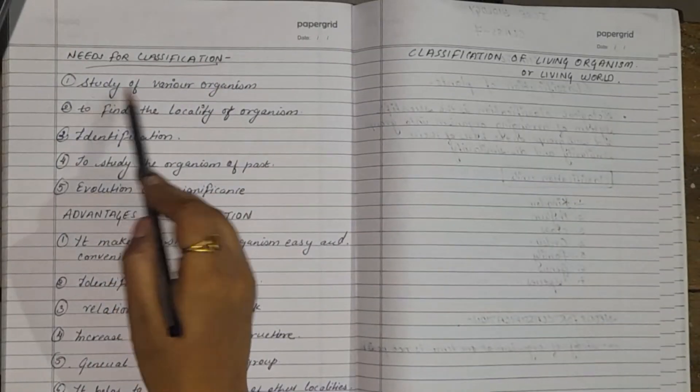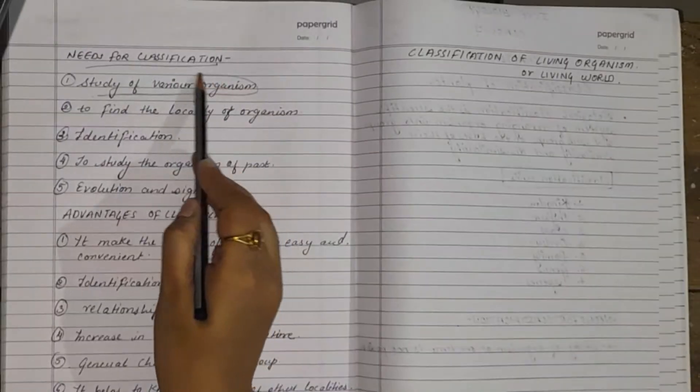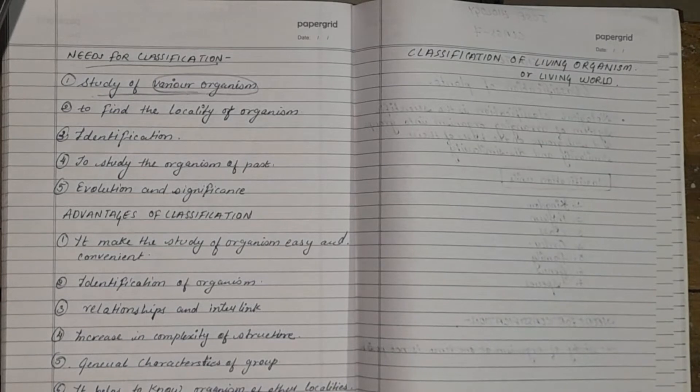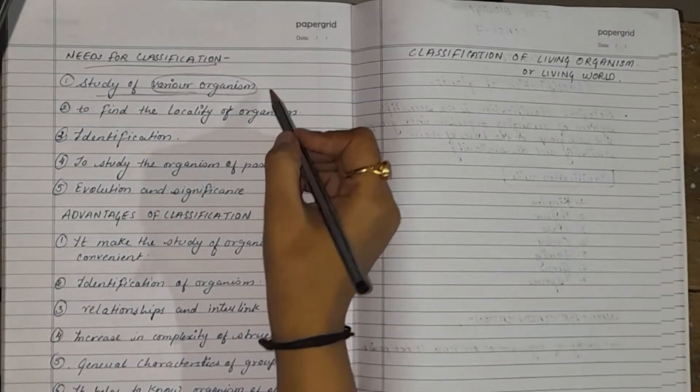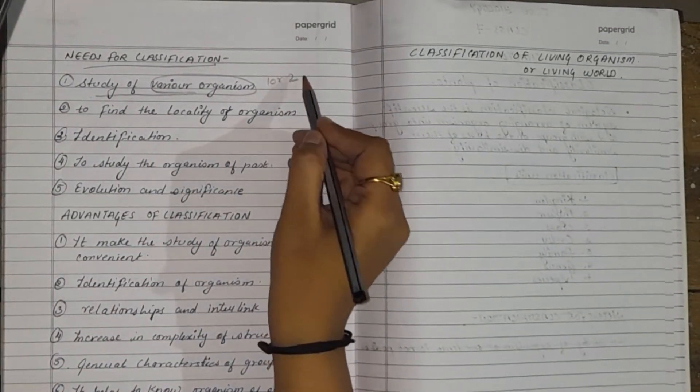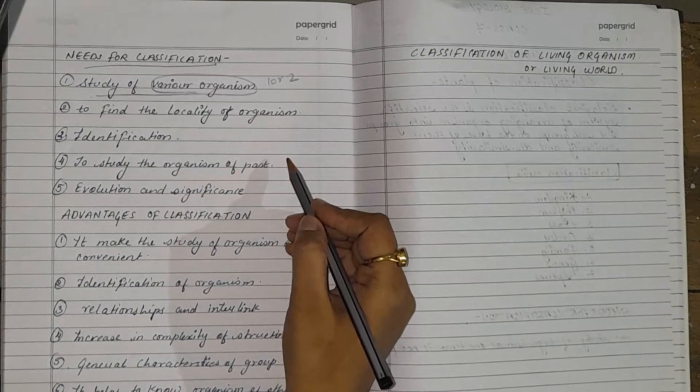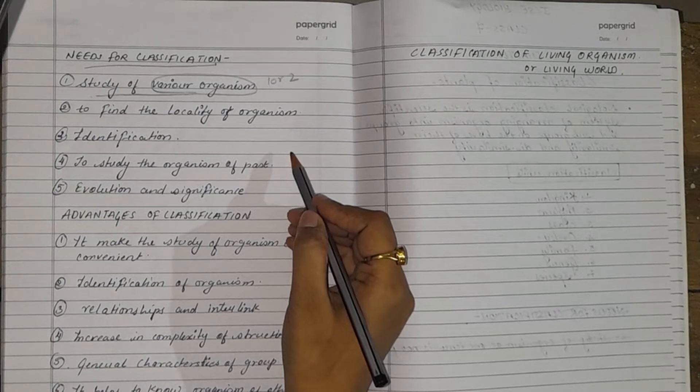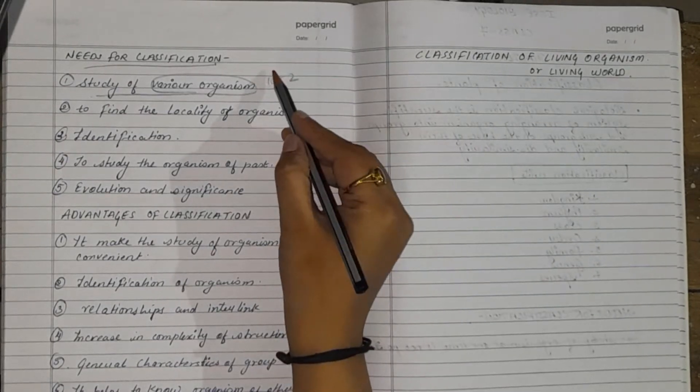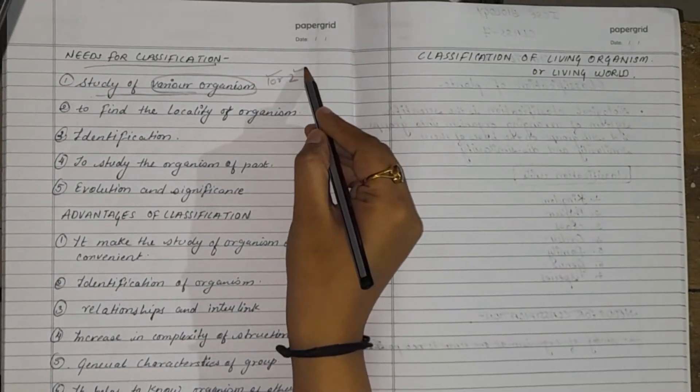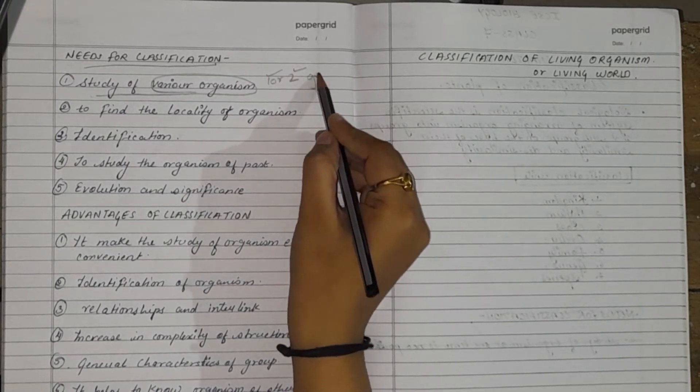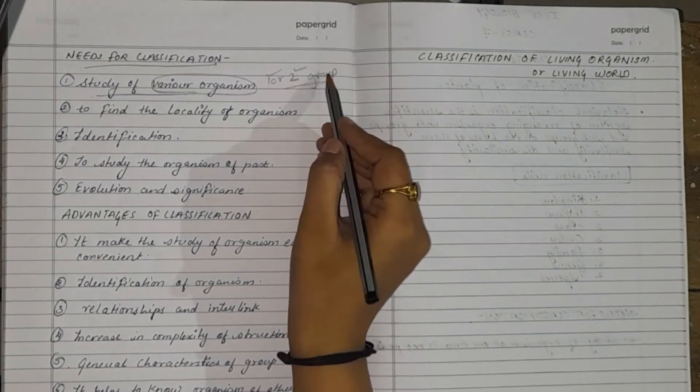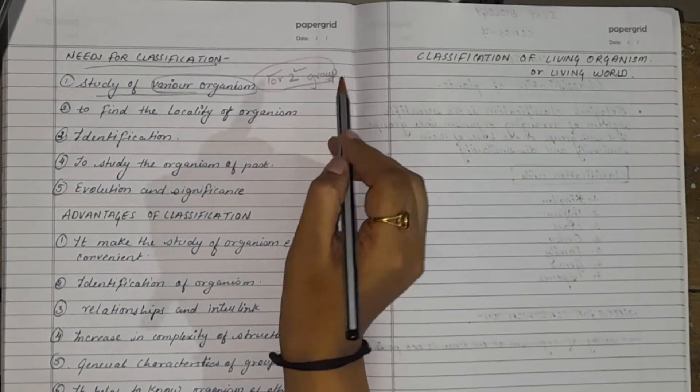The very first need is study of various organisms. It is not possible to study every organism at a time. The study of one or two organisms of a group gives the sufficient information about the essential features of that group. It means if we will study one or two organisms of that group, we will get enough information about the whole group.